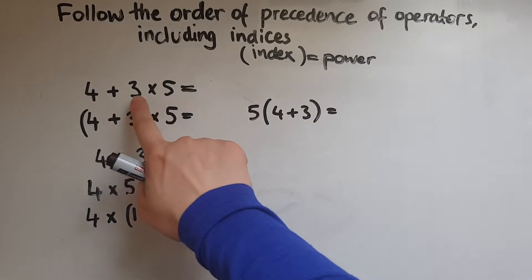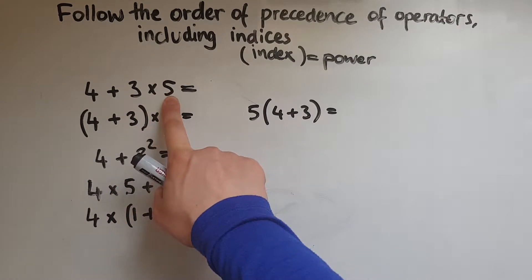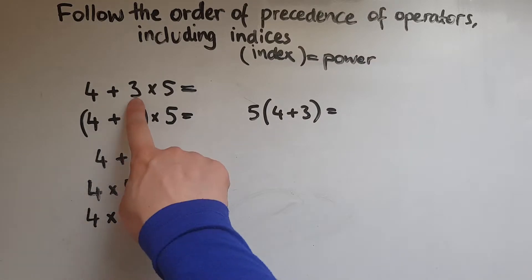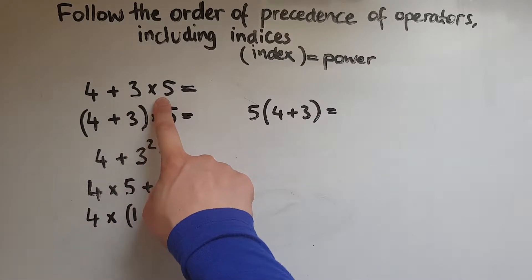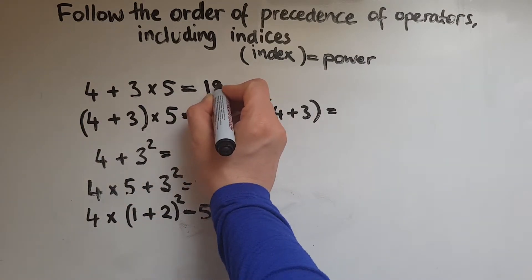We said that we do multiplication and division first and then addition and subtraction. So 3 lots of 5 is 15, add 4 is 19.